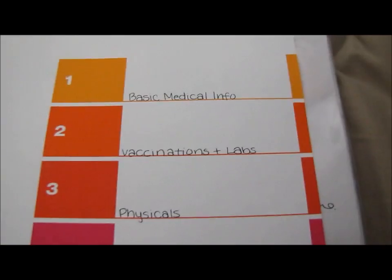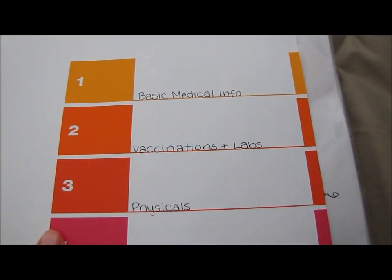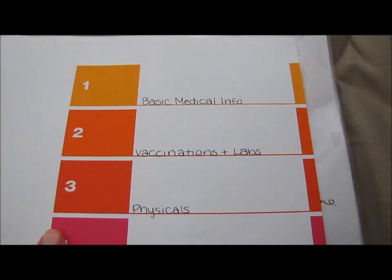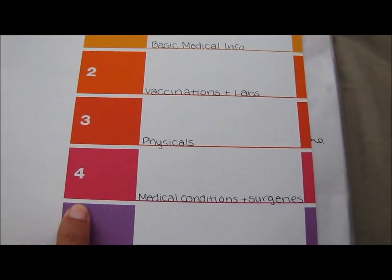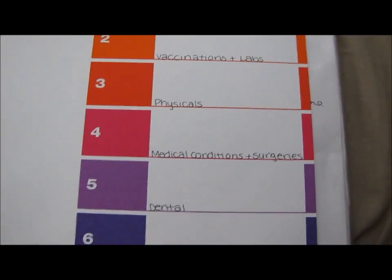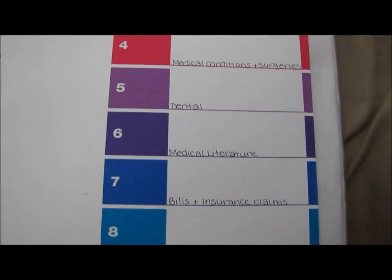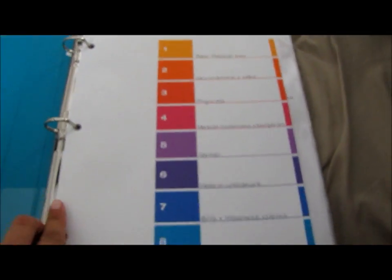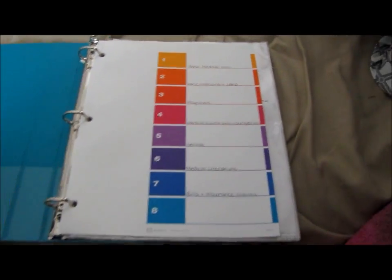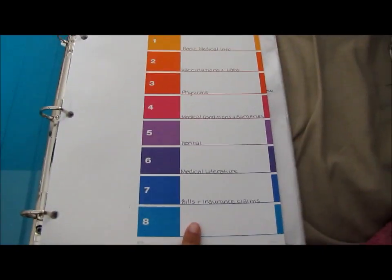So in each of the sections — let me zoom in — there is a purpose. Number one is basic medical info. Two is vaccinations and labs. Three is physicals. Four is medical conditions and surgeries. Five is dental. Six is medical literature. And seven is bills and insurance claims. So everything has a spot, and then if I need an eighth spot, I have it.